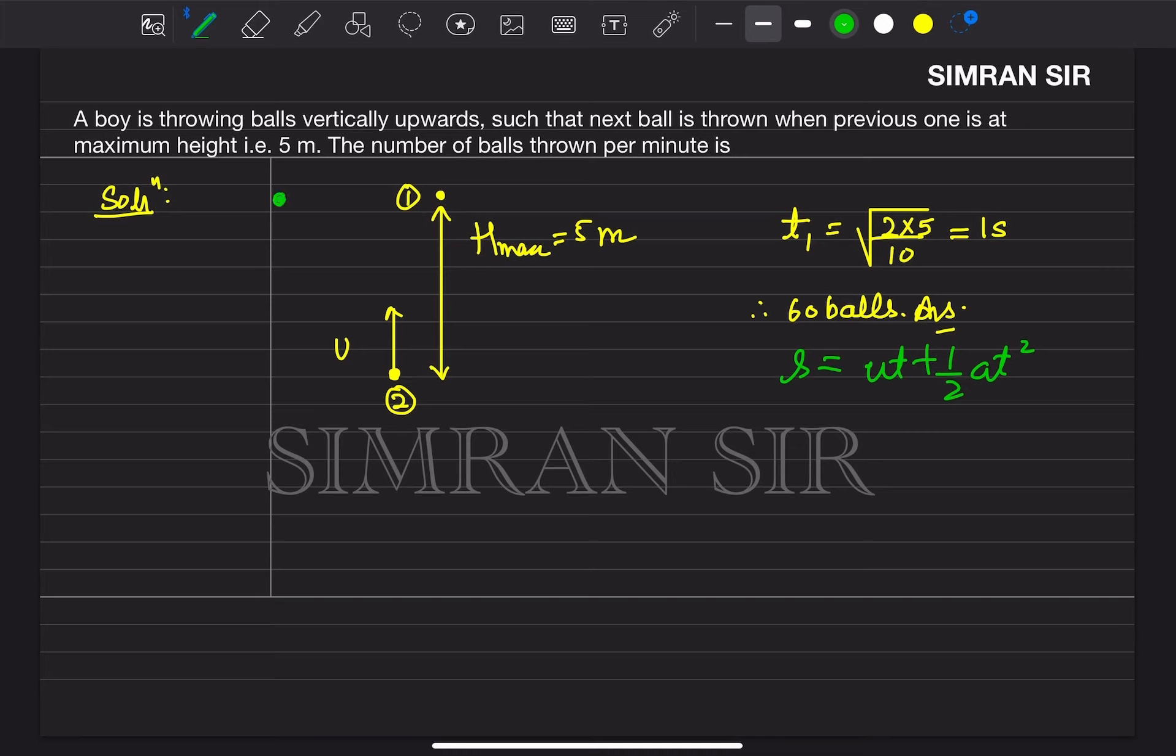At the top, the initial speed is 0. Using S equals UT plus half aT square, the displacement going down is: if I go up to H height, it will be H equals half GT square. Solving for T, we get T equals root 2H by G.